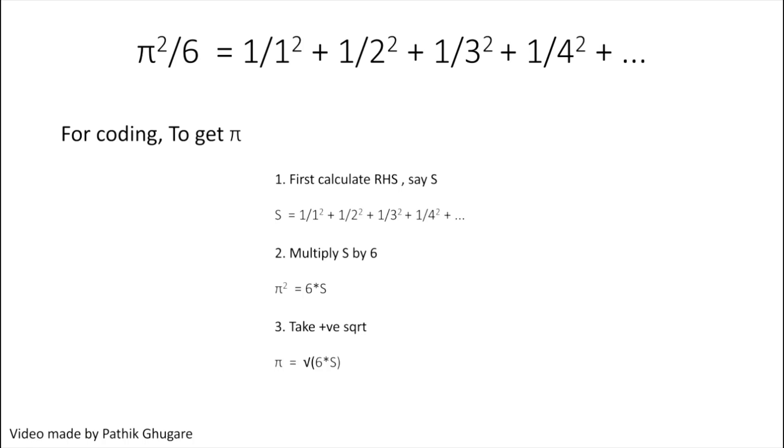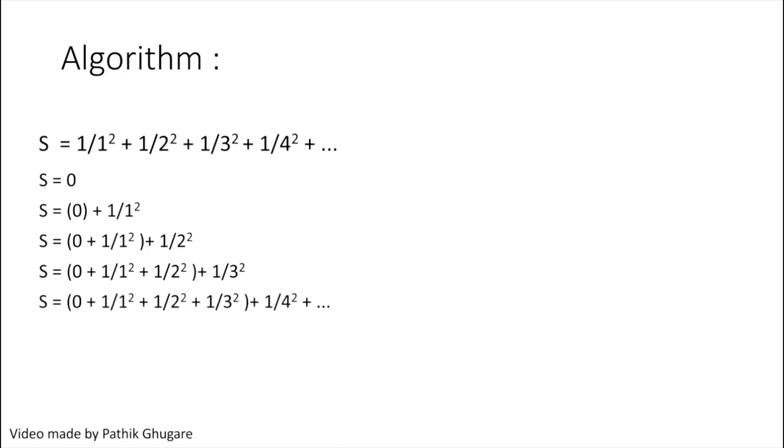Now let's see how we can use this to code and what algorithm to use. We have this series S, and for this type of series problem including summations, what we generally do is initially we say there was nothing, like zero. That is, we are initializing our series with zero. Since we know this pattern, we will add 1/1² and zero, then we will add 1/2² to the previous term, then we will add 1/3² to the previous term. If we go on doing this infinitely many times, we will eventually get our series S.